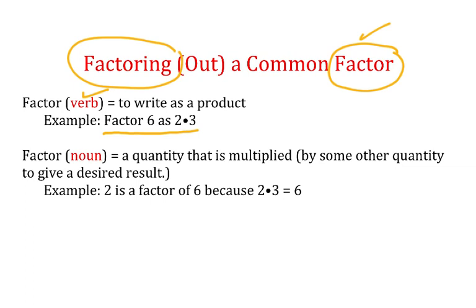When we use it as a noun, a factor is a quantity that is multiplied by some other quantity to give a desired result. In the same example, but looking at it a different way, 2 is a factor of 6 because 2 is multiplied by something else to give you 6. As we look at polynomials, we're going to factor as a verb by looking for a common factor.